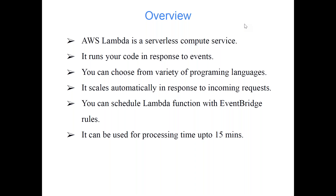Lambda can be used for processing time up to 15 minutes — that's a limitation. If you want to execute code that runs longer than 15 minutes, Lambda is not the right option. Lambda is for ad hoc, small tasks — maybe 5 minutes or even less. If you need something beyond 15 minutes, Lambda will timeout and you won't get your output. In that case, you should use a server like EC2, which can keep running for 24 hours. If your data processing job runs for 3 hours, EC2 can handle that, but Lambda cannot.